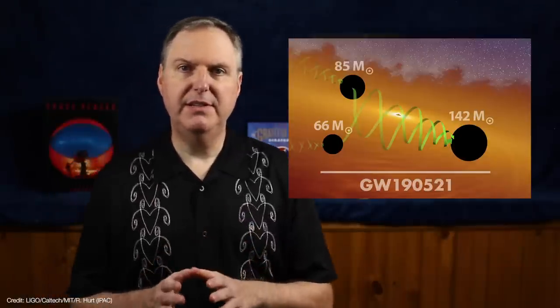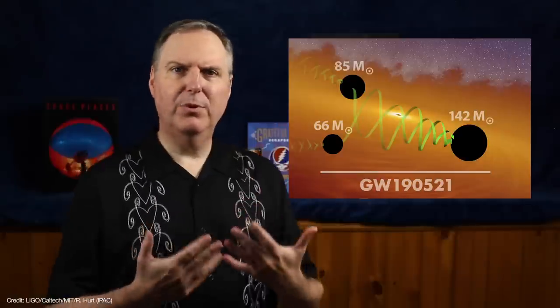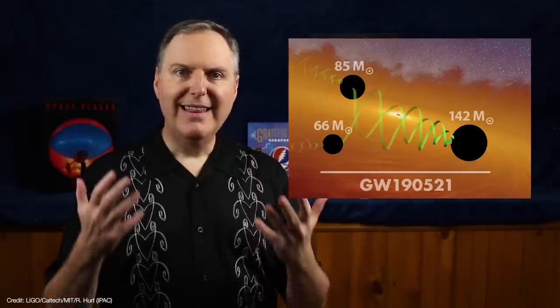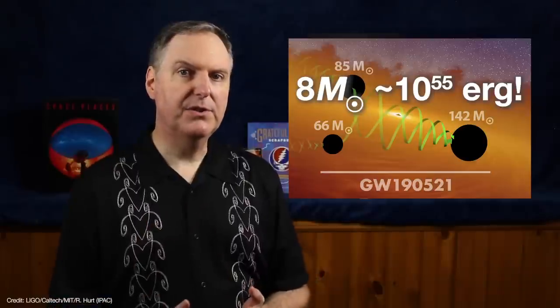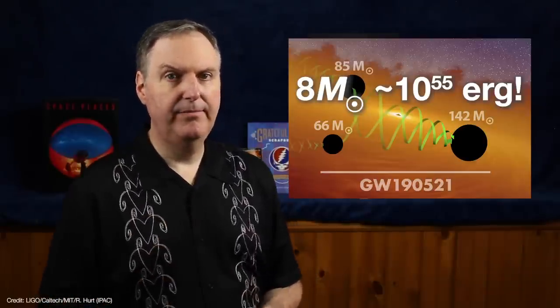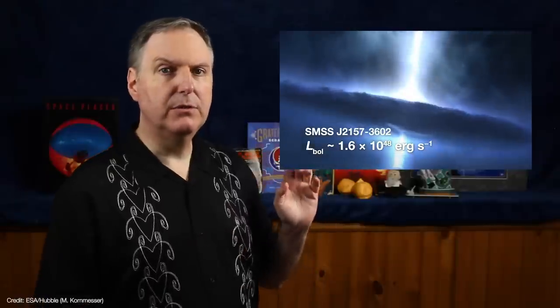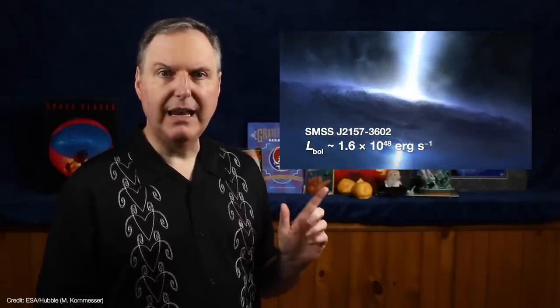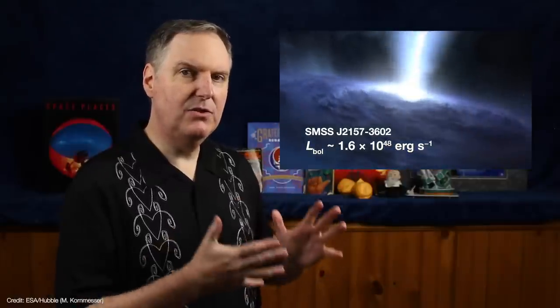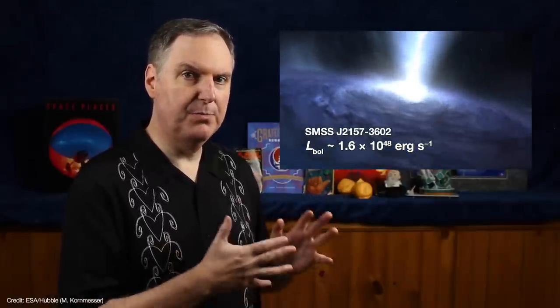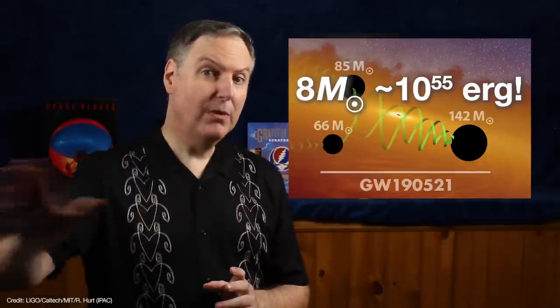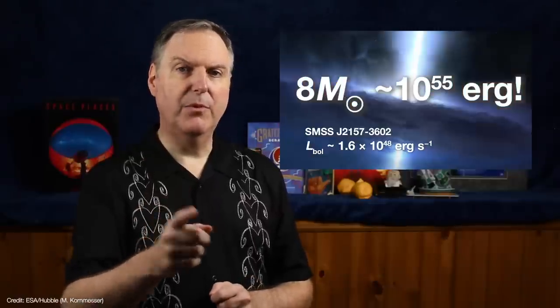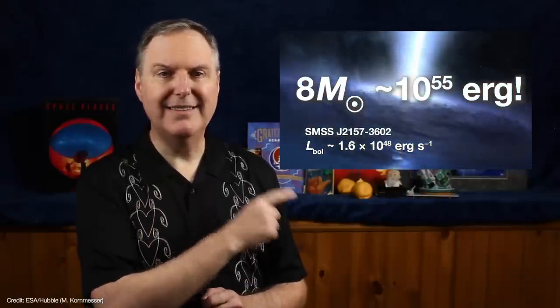Now, there are some uncertainties in these measurements, but even if we're conservative and just round down to only 8 solar masses, that still converts into a staggering 10 to the 55 ergs radiated in a tenth of a second. By comparison, the most luminous quasar ever detected radiates at 1.6 times 10 to the 48 ergs per second. In other words, this black hole merger unleashed more energy in one tenth of one second than the most luminous quasar will emit in 72 days.